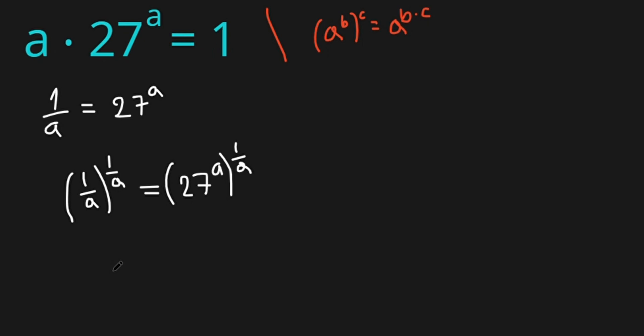Using this formula, we have 1 over a all this to the power of 1 over a equals 27 to the power of a times 1 over a. Let's eliminate here. So we have 1 over a to the power of 1 over a equals 27.